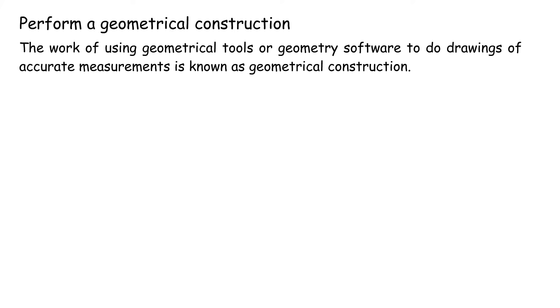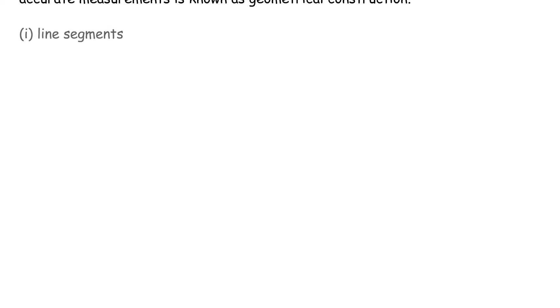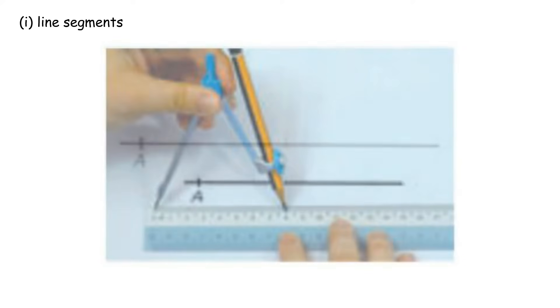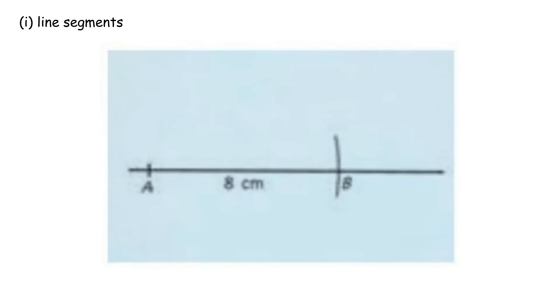Perform a geometrical construction. The work of using geometrical tools or geometry software to do drawings of accurate measurements is known as geometrical construction. 1. Line segments: a section of a line with a fixed length is known as a line segment. Construct a line segment AB with a length of 8 centimeters using only a pair of compasses and a ruler. 1. Draw a line and mark point A on the line. 2. Measure a distance of 8 centimeters on the compasses.